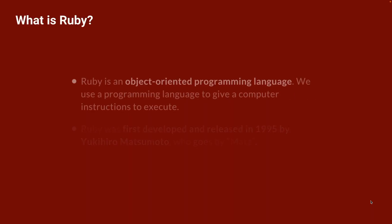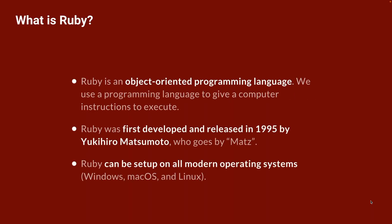So first up, what is Ruby? Ruby is an object-oriented programming language, and although this may be your first experience with a programming language, we use a programming language to give a computer instructions to execute. Programming languages allow us to automate operations by telling the computer how to perform those operations for us. Now, in regards to the term object-oriented, I realize it may be your first time hearing this and we'll talk more about what that word means technically, but for now, you can think of object-oriented as the category or classification of language that Ruby falls under.